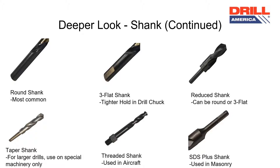The 3-flat shank allows for a tighter hold on the chuck. Reduced shank drill bits enable greater size flexibility. For example, a customer may need a 1 inch drill bit but may only be able to hold a ½ inch drill bit with their machine.